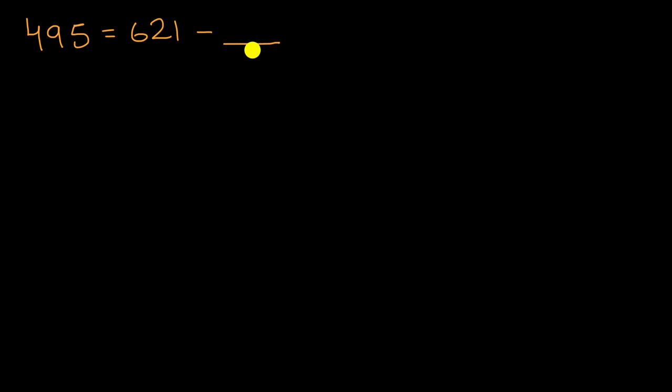Okay, now let's do this together. One technique is to try to visualize this on a number line. 495 is what you get when you subtract something from 621. So let me put those two numbers on a number line. We're gonna start at 621 and subtract blank to get to 495.